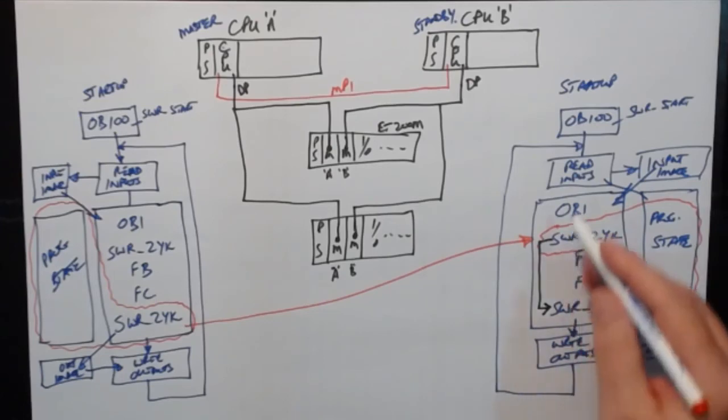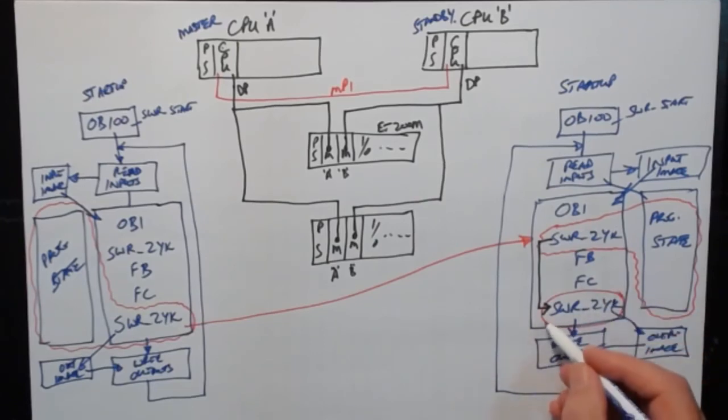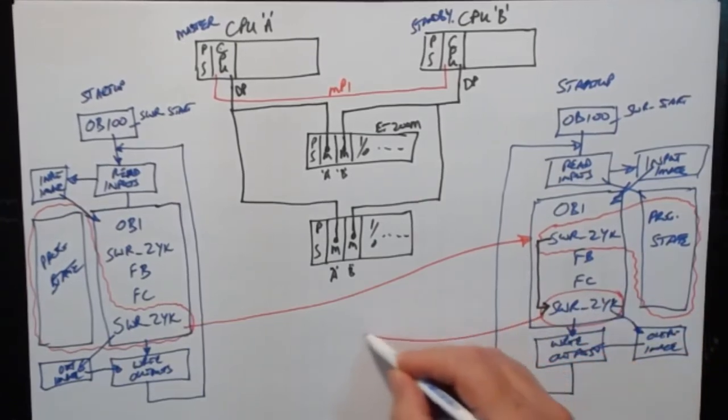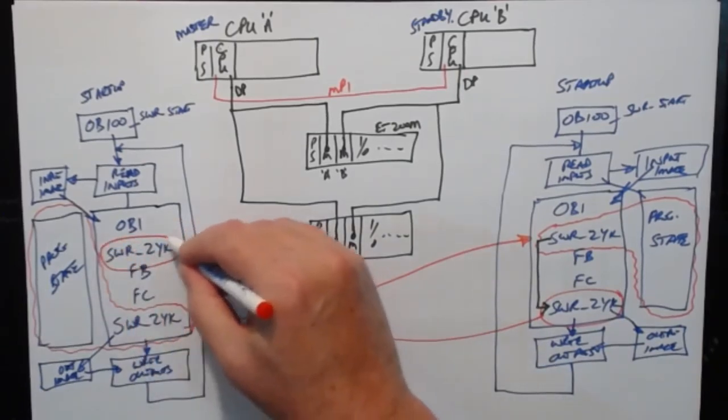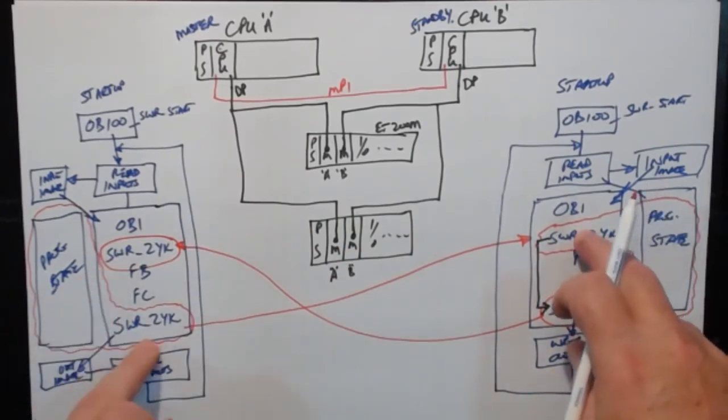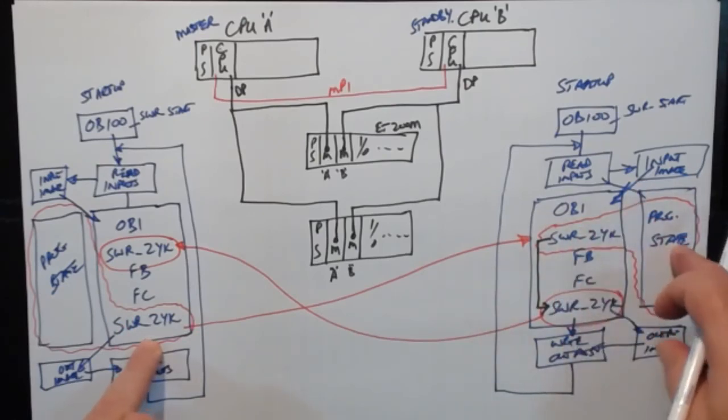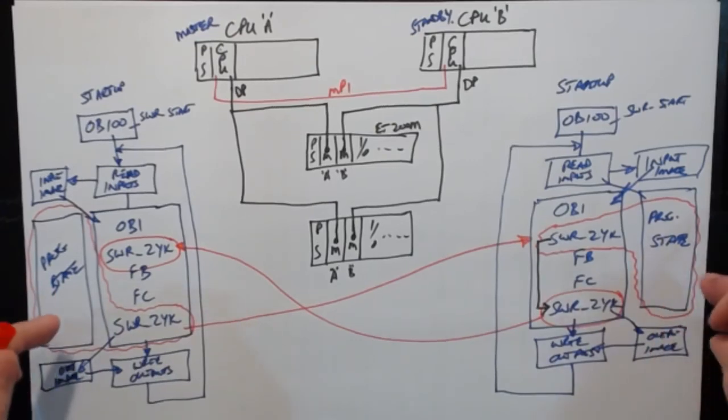At the end of the OB1 when it reaches here again, it then picks up the state of the standby PLC and sends it over MPI to the master PLC. So the master PLC knows what the standby PLC is up to, and the standby PLC knows what the master is up to. And it keeps the program state identical to the master state. So we'll discuss what that means in a further video. But right now I think that's enough to get an idea of what we're looking at. See you in the next video.